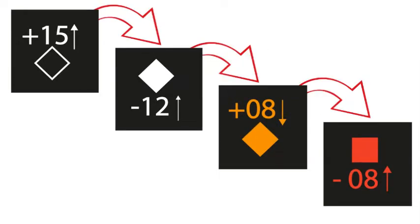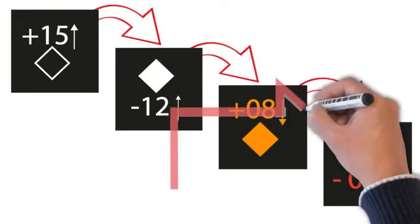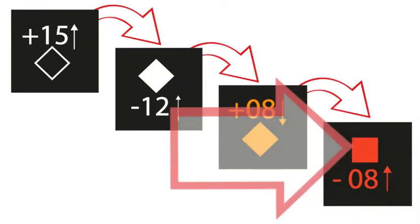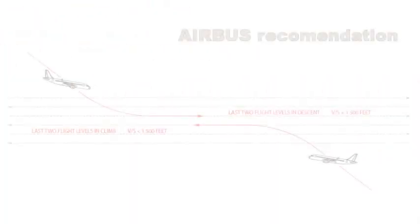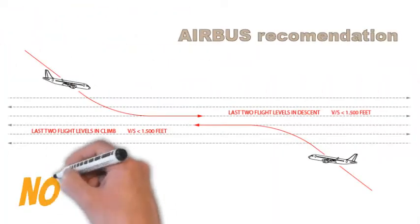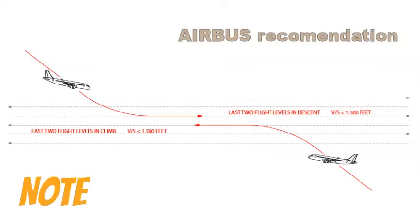The TCAS may generate a Resolution Advisory, RA, without a previous Traffic Advisory, TA, in some dynamic situations. This situation is linked to a rapid change in the intruder detection category. Airbus recommends controlling the vertical speed to comply with the vertical speed limitations during the last 2,000 feet of a climb or descent to 1,500 feet per minute.